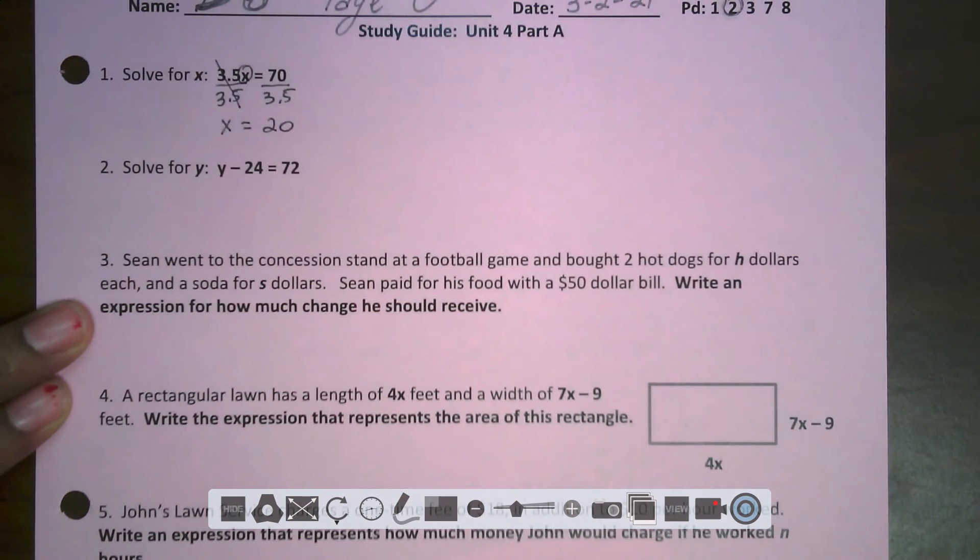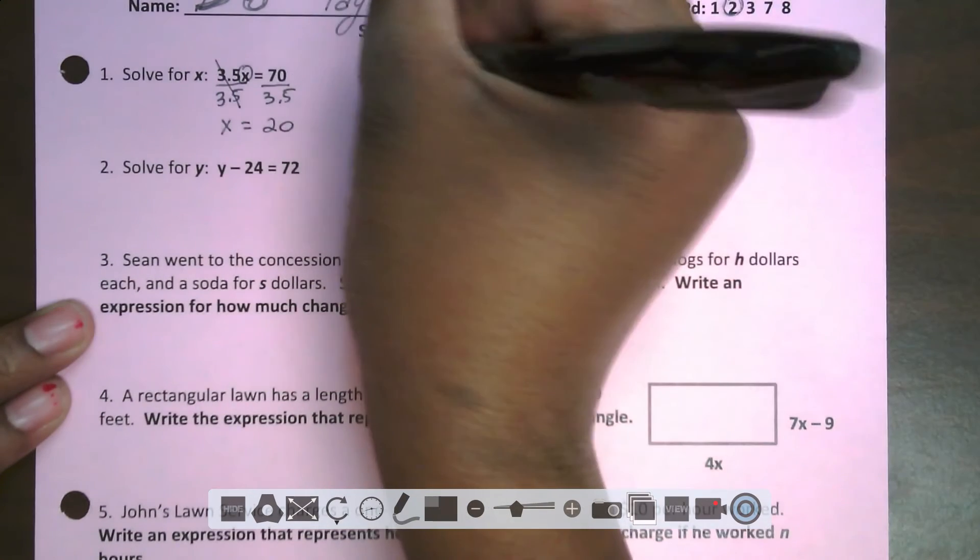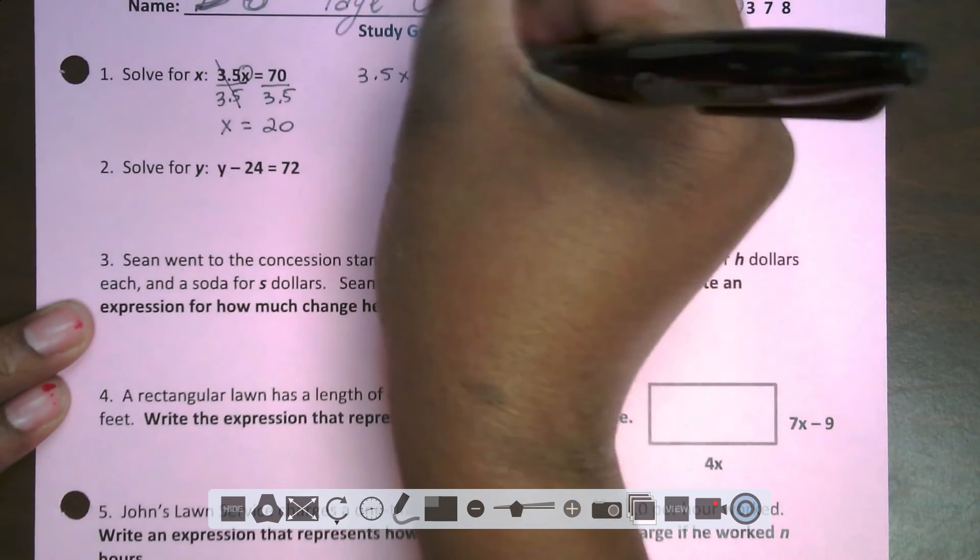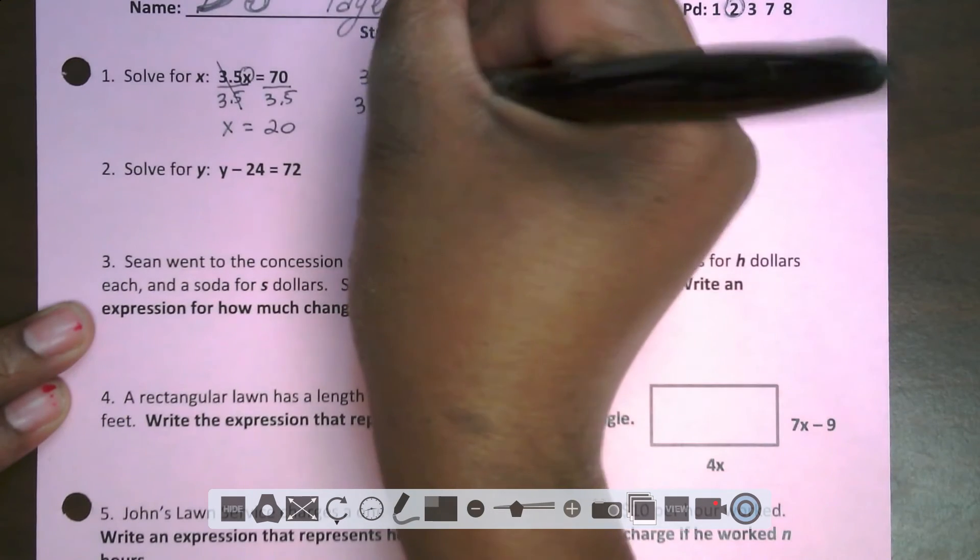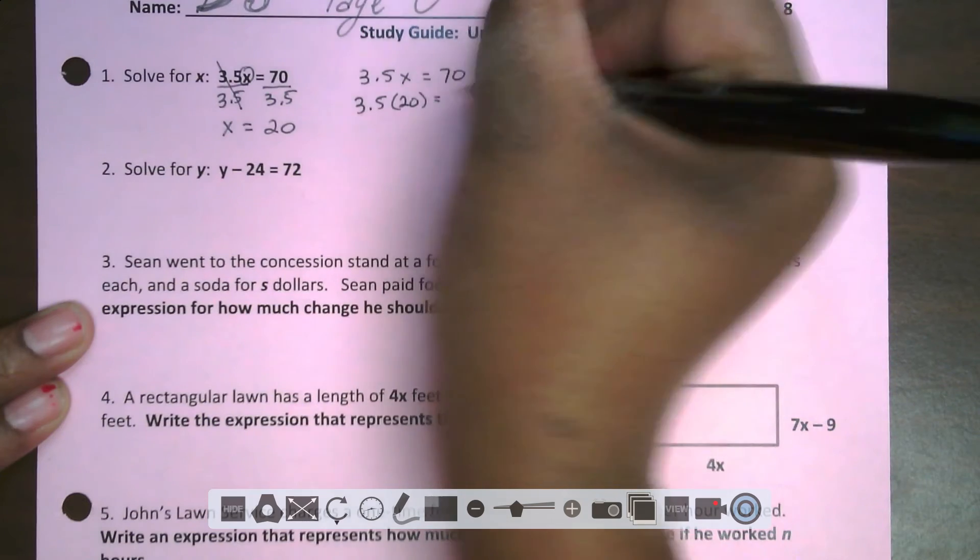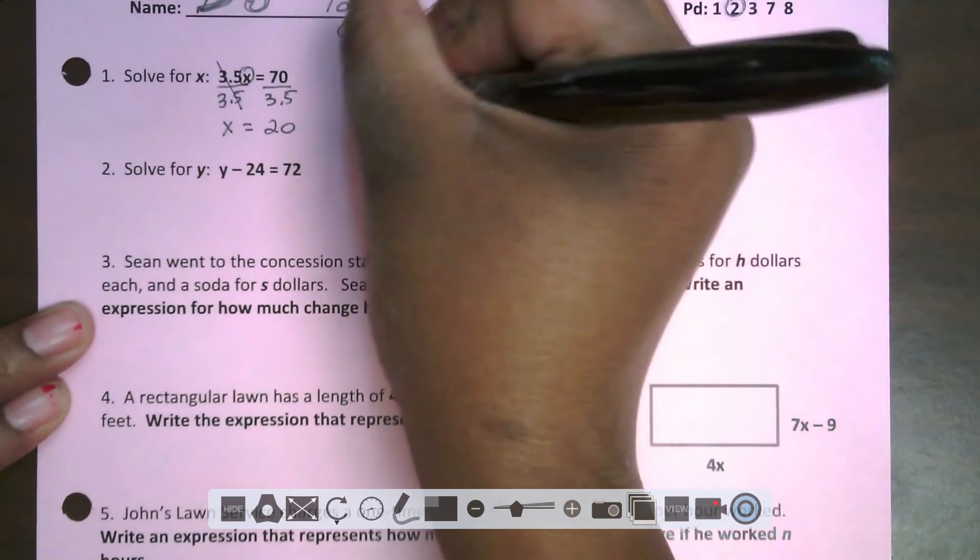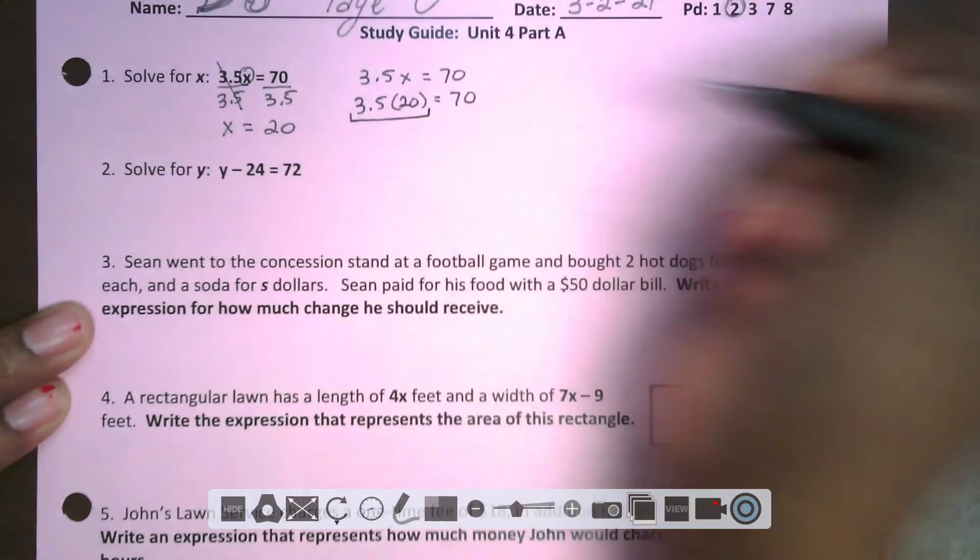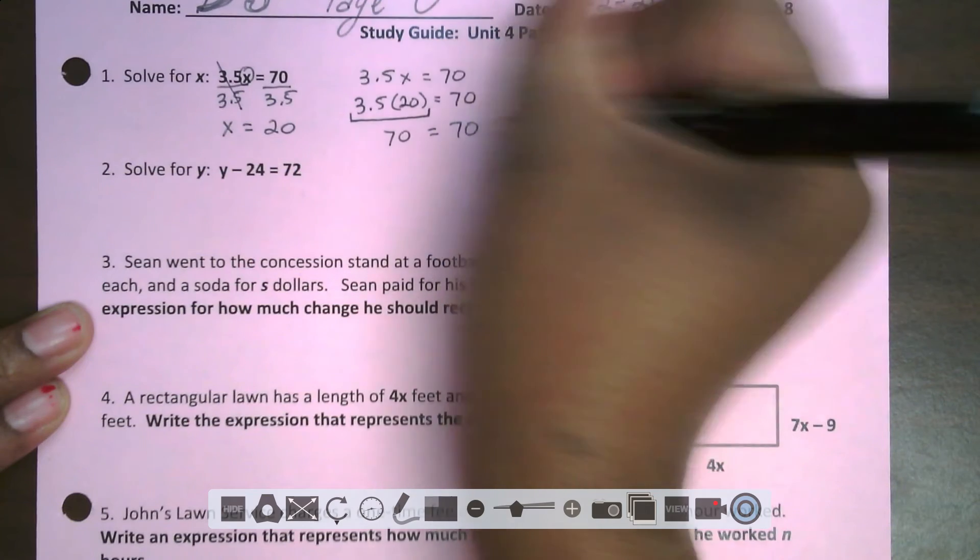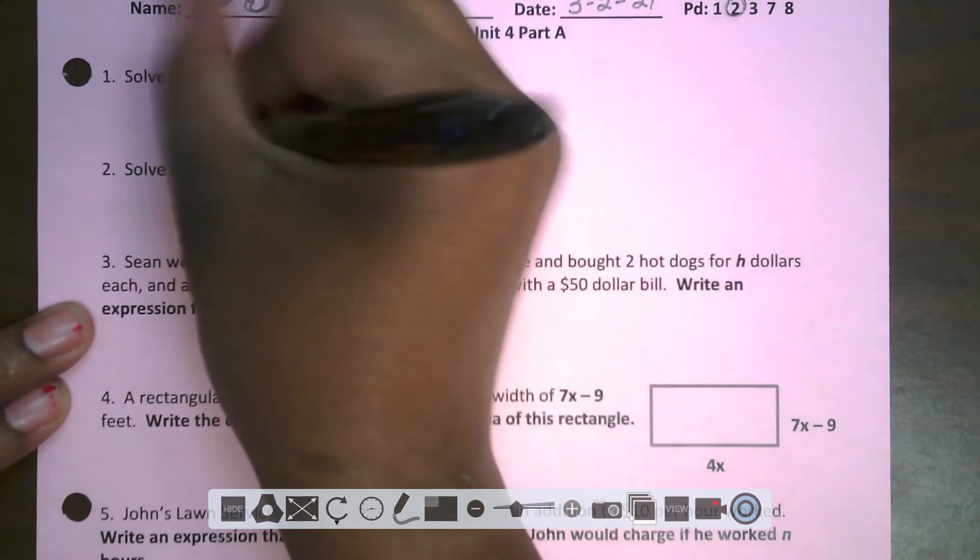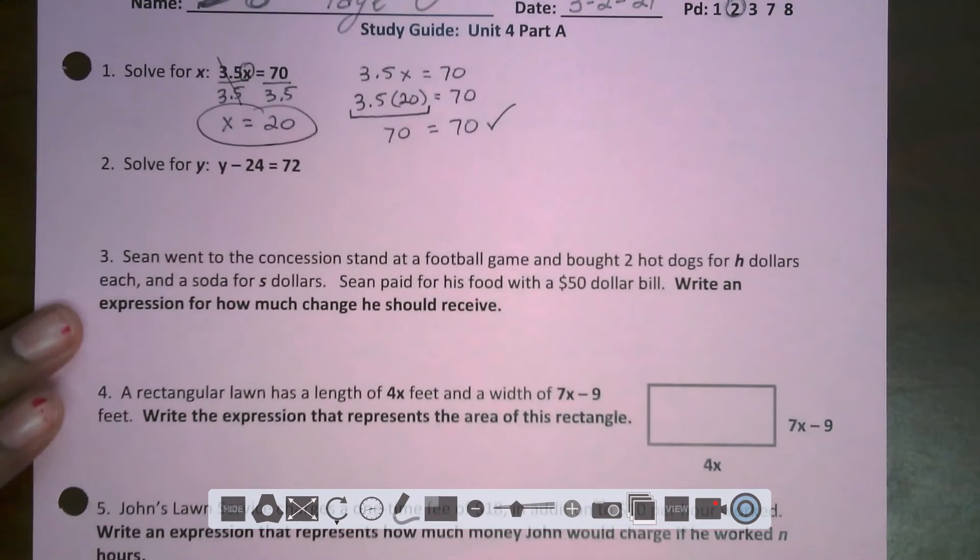x is 20, but now we're going to check it. 3.5x equals 70 was our original equation. Now I'm going to substitute in my 20 for the x and solve to see. I'm putting in calculator 3.5 times 20, and I get 70. 70 does indeed equal 70. So my answer of x equals 20 was correct.